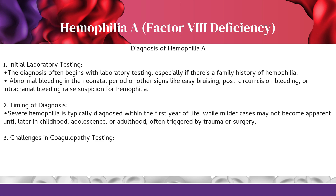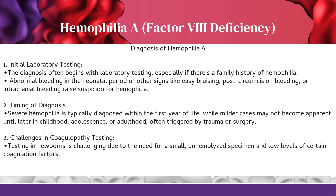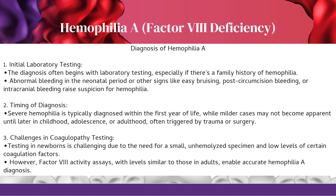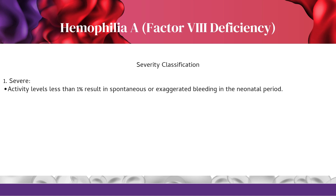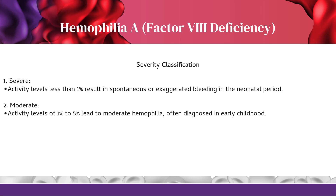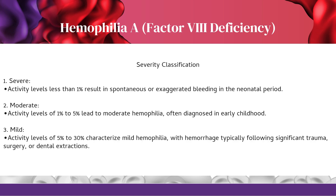Testing in newborns is challenging due to the need for a small, unhemolized specimen and low levels of certain coagulation factors. However, factor 8 activity assays enable accurate hemophilia A diagnosis. Severity classification: Severe — activity levels less than 1% result in spontaneous or exaggerated bleeding. Moderate — activity levels of 1% to 5%, often diagnosed in early childhood. Mild — activity levels of 5% to 30%, with hemorrhage typically following significant trauma, surgery, or dental extractions. Patients may experience extended periods without symptoms.